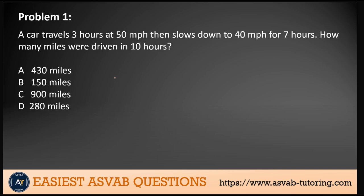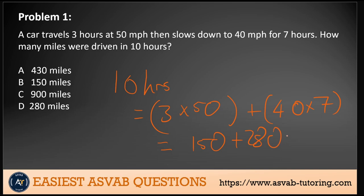So total miles completed in 10 hours is 3 times 50 plus 40 times 7, which would mean 150 plus 280 miles, which equals 430 miles. There you go, that's our answer. Moving on to the next question.